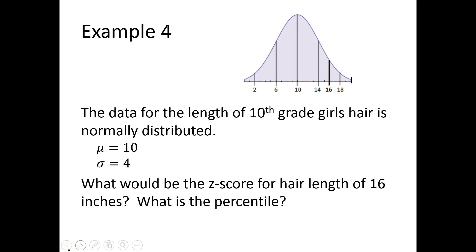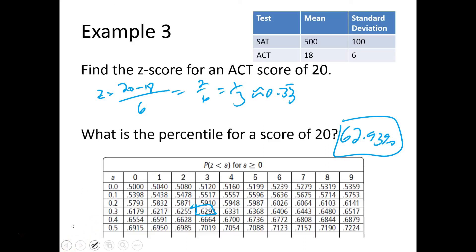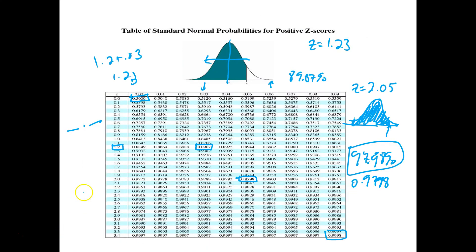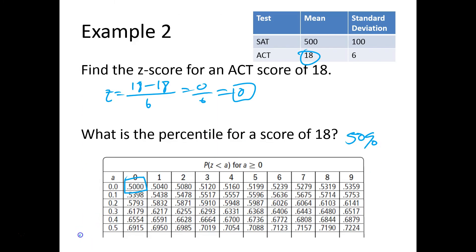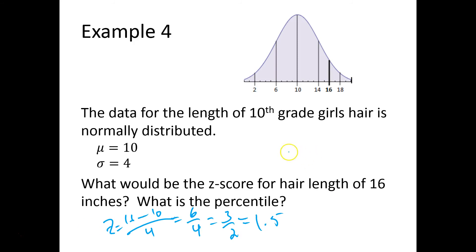Here's a different distribution. The length of a 10th grade girl's hair is normally distributed with an average of 10 and a standard deviation of 4. They ask for the z-score for hair length of 16: z equals 16 minus 10 over 4, which is 6 fourths or 3 halves, so 1.5. They also want the percentile — the area to the left. Going to the chart for z equals 1.5 gives 0.9332. So this person is at about the 93rd percentile.